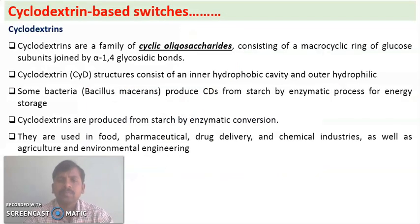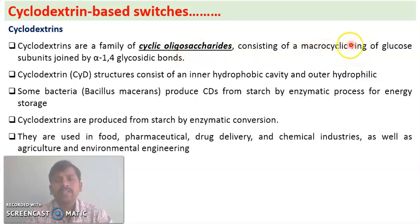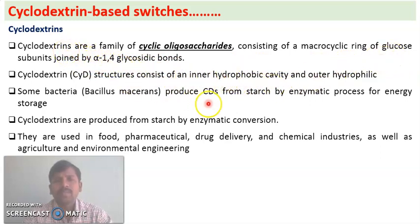Welcome to this session on cyclodextrin-based switches. Cyclodextrins are cyclic sugars — cyclic oligosaccharides — consisting of a macrocyclic ring made of glucose subunits. Cyclodextrins with 6 glucose subunits are alpha cyclodextrins, those with 7 are beta cyclodextrins, and those with 8 are gamma cyclodextrins. The glucose subunits are joined by alpha 1,4 glycosidic bonds.